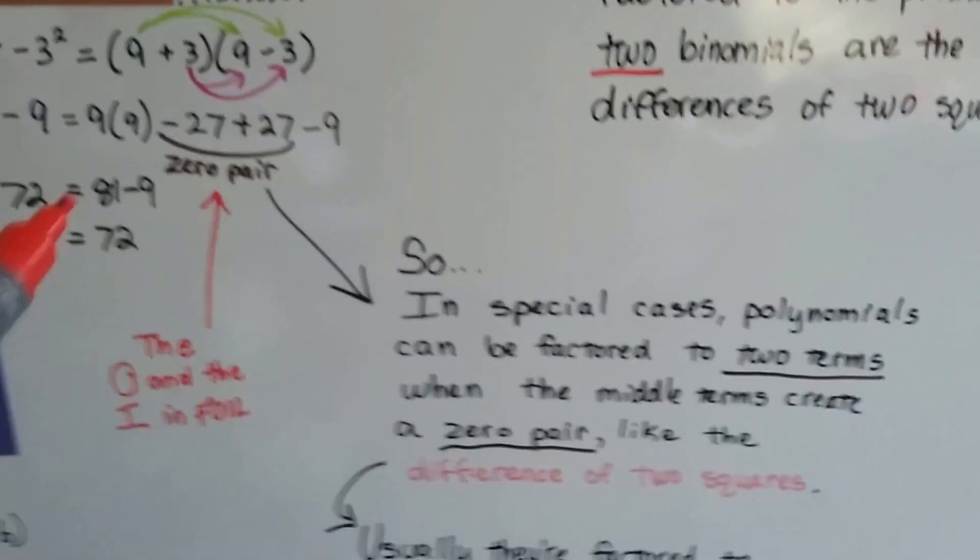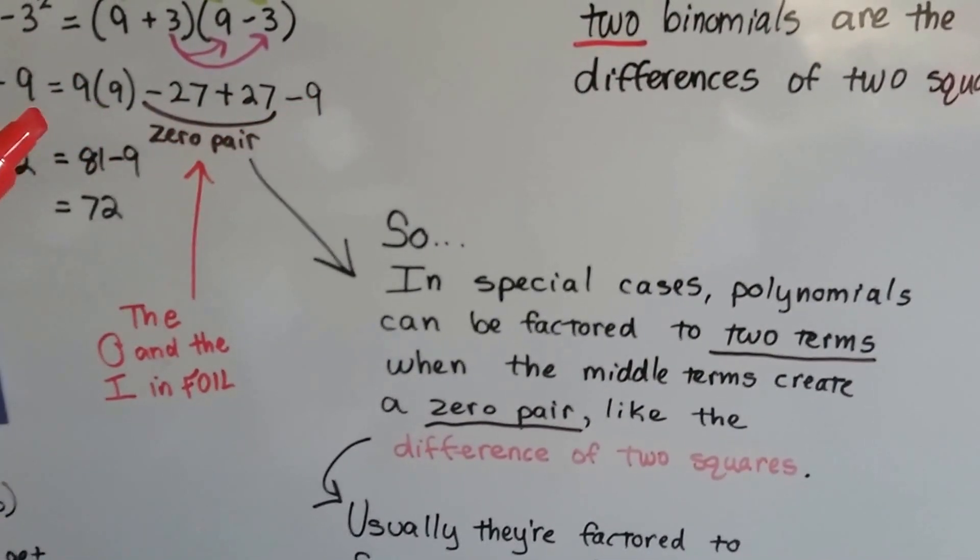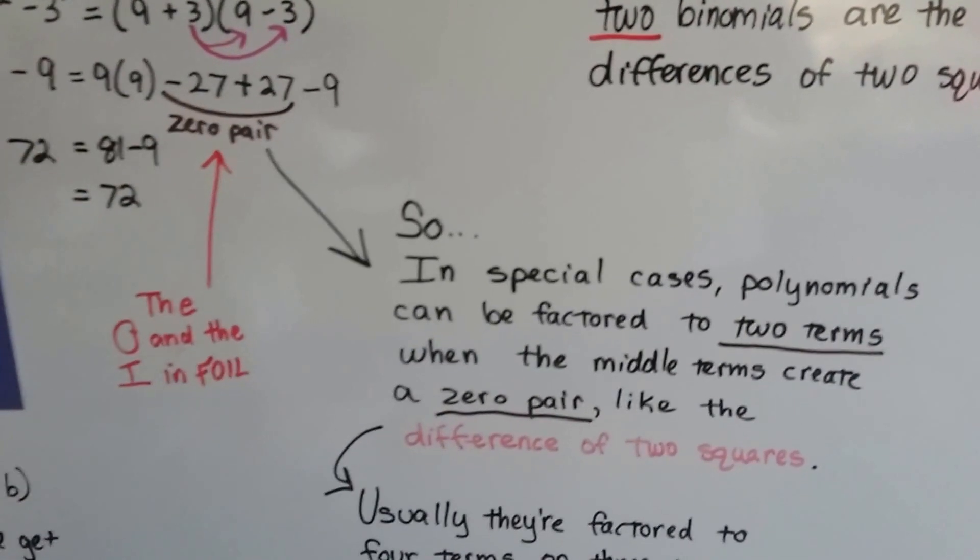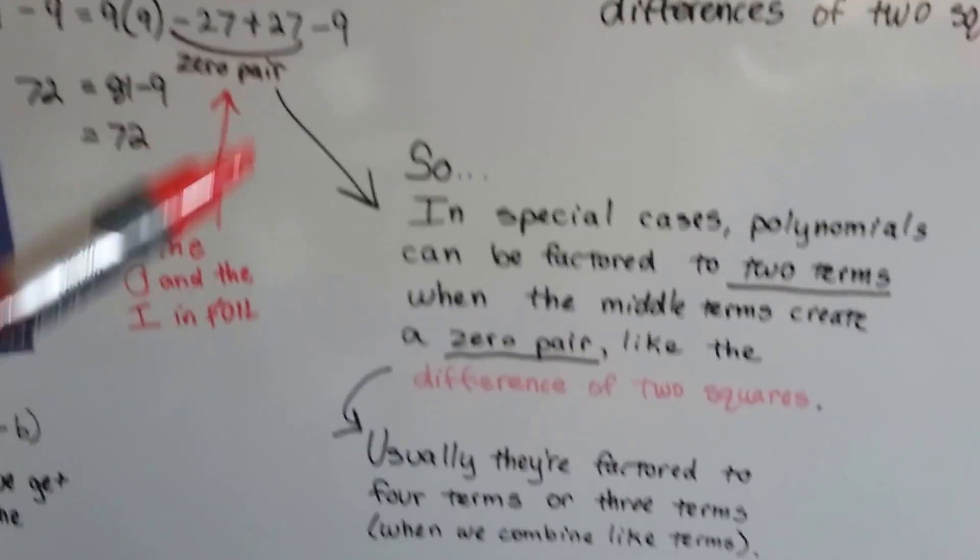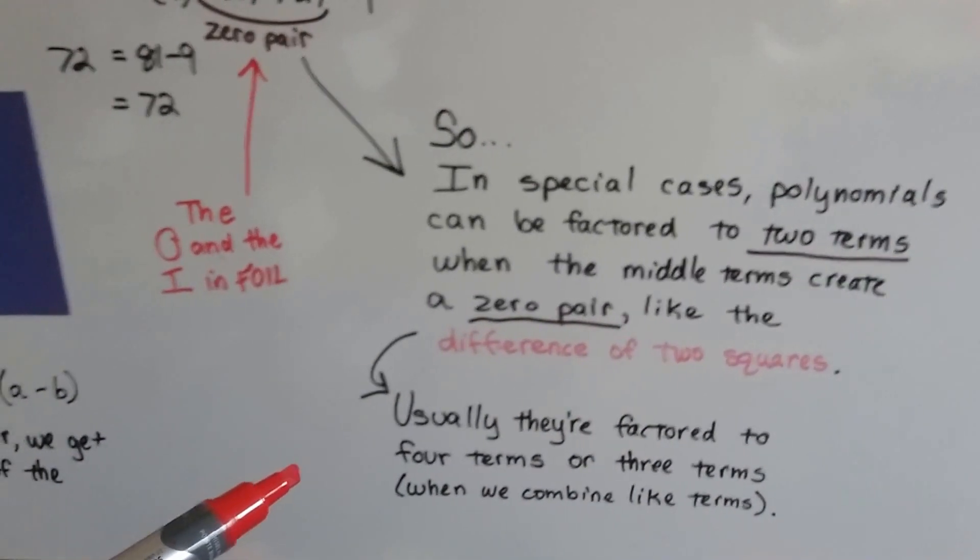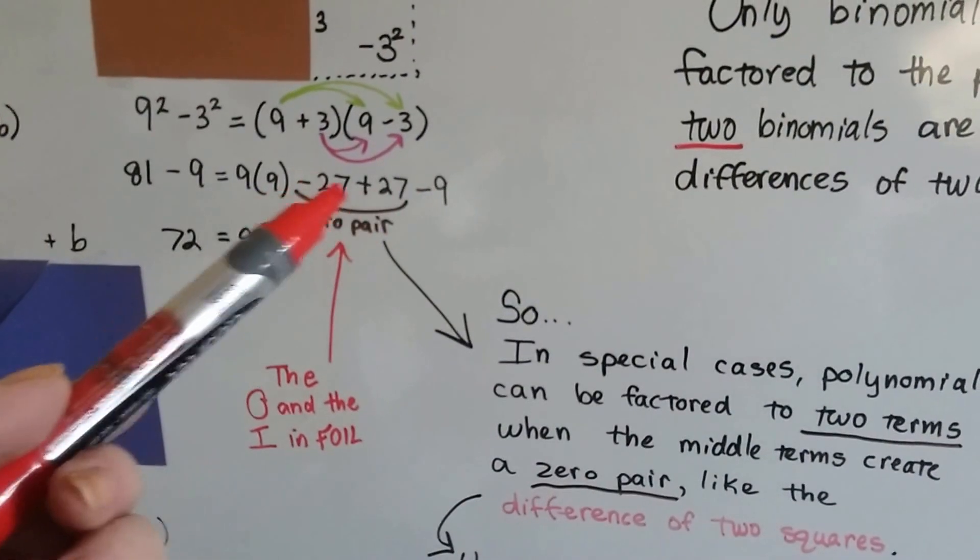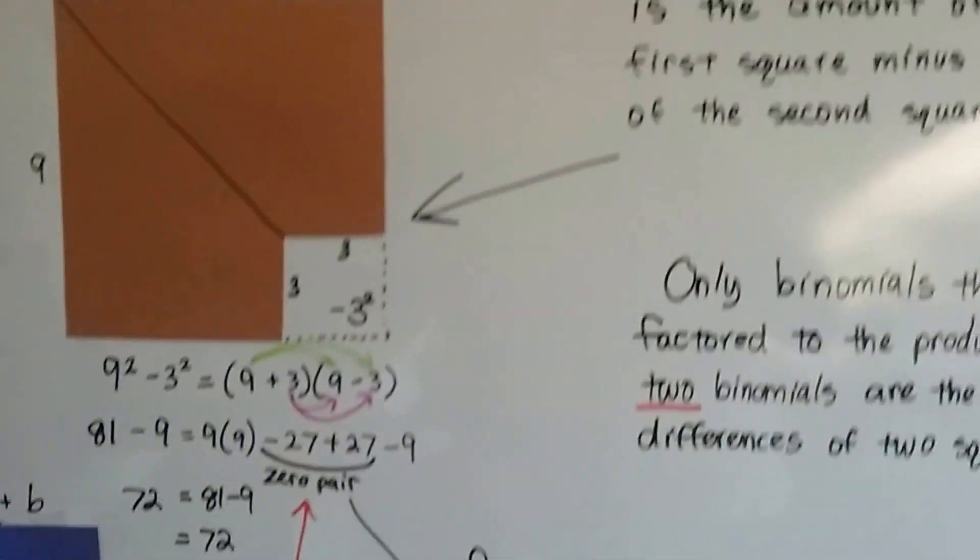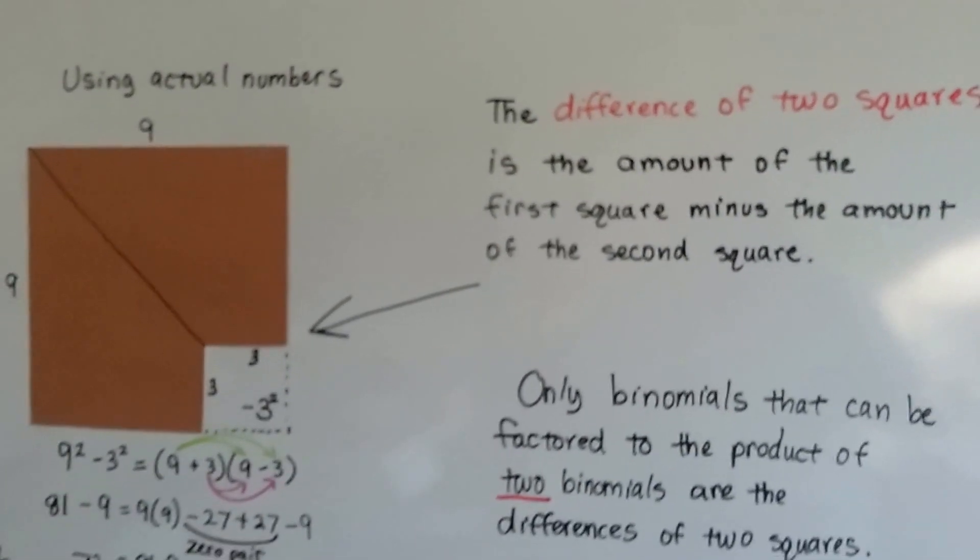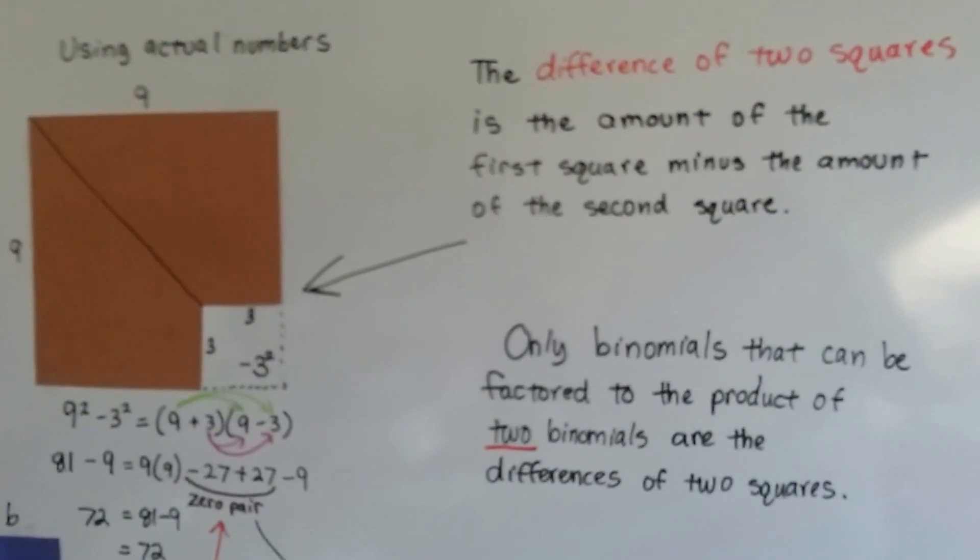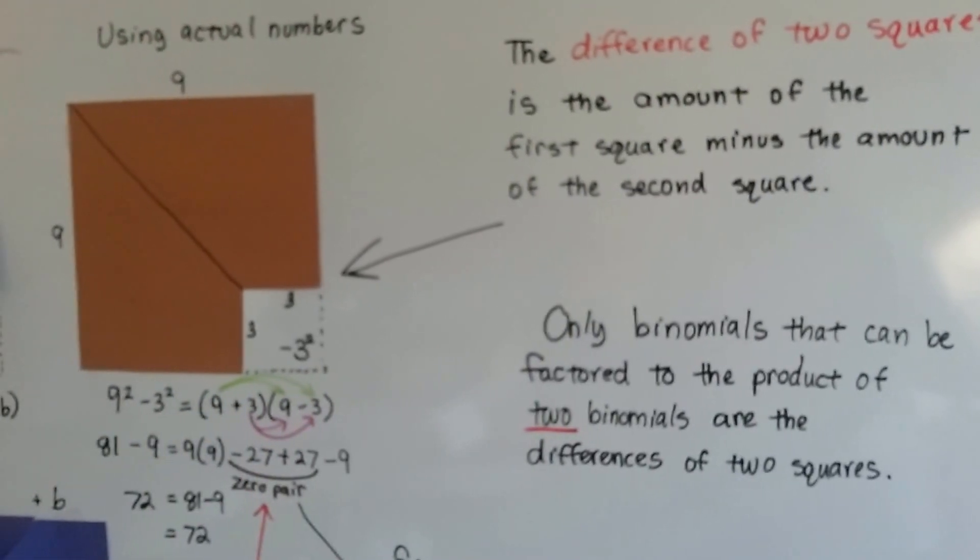So, in special cases, polynomials can be factored to two terms. When the middle terms create a zero pair, like the difference of two squares. This is the o and the i in FOIL. And usually they're factored to four terms or three terms when we combine like terms, but in special cases, like the differences of two squares, it goes down to two terms because the two middle ones create a zero pair. And the difference of two squares is the amount of the first square minus the amount of the second square. And only binomials that can be factored to the product of two binomials are the differences of two squares.